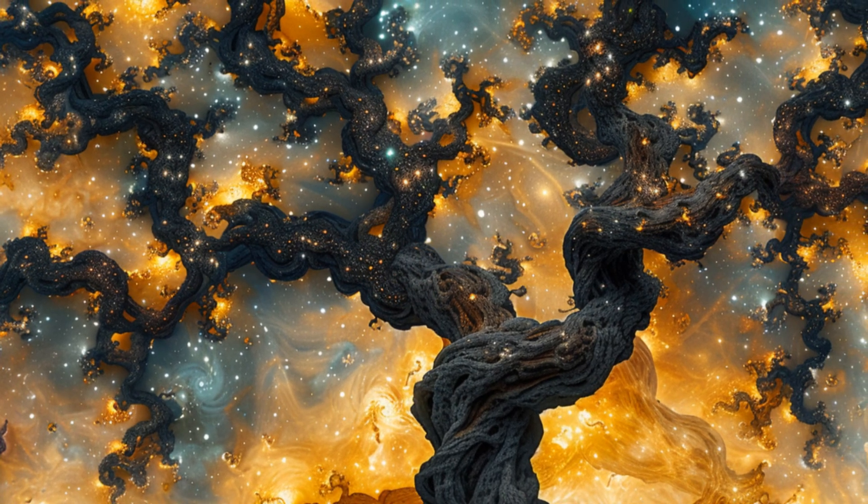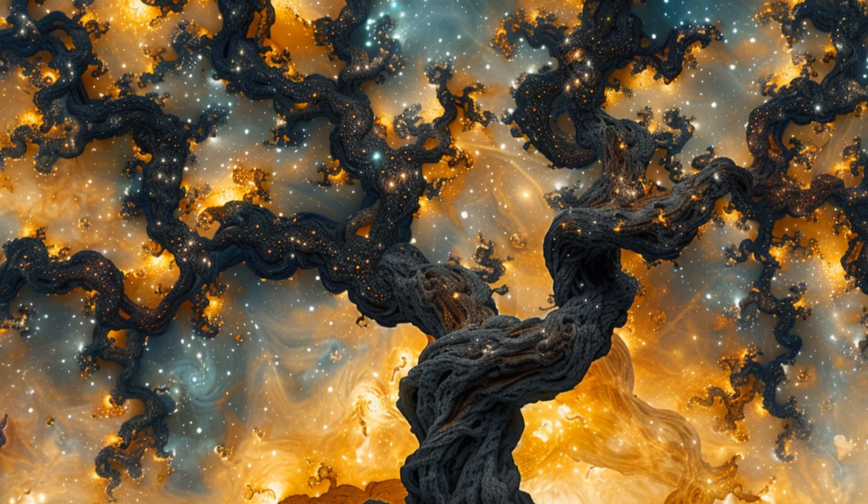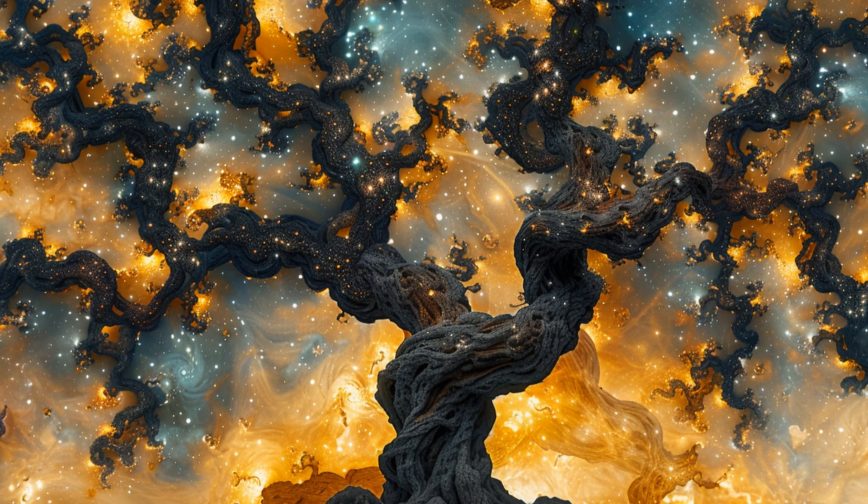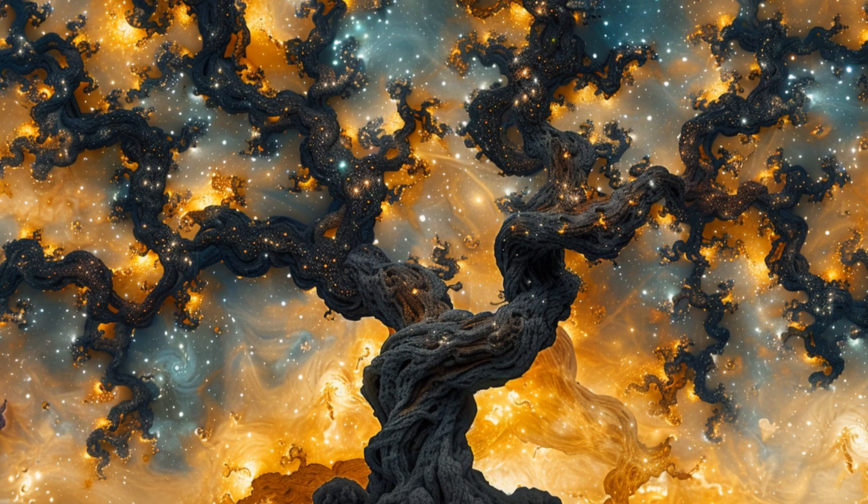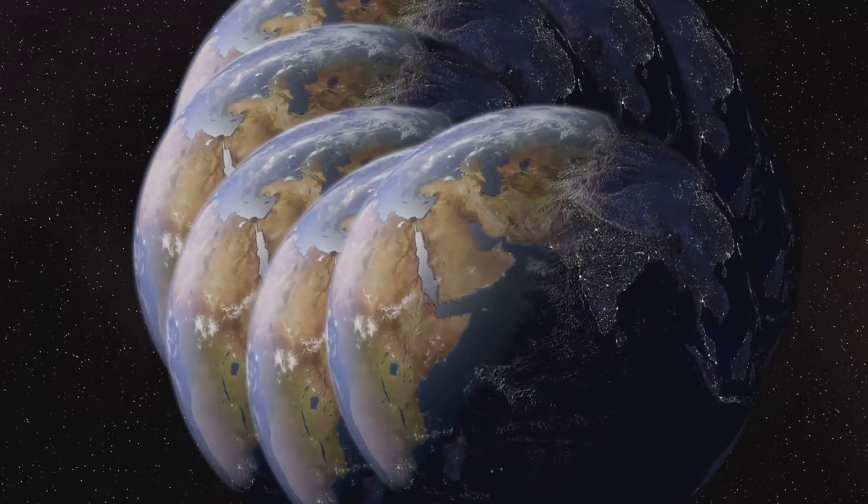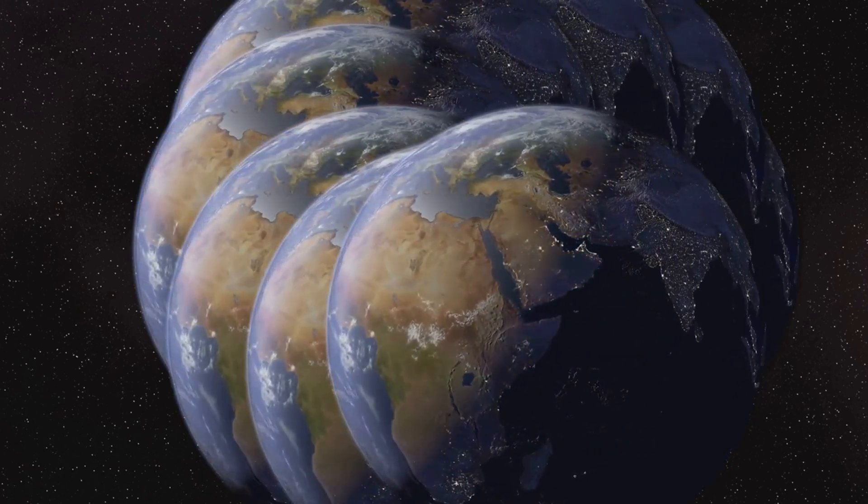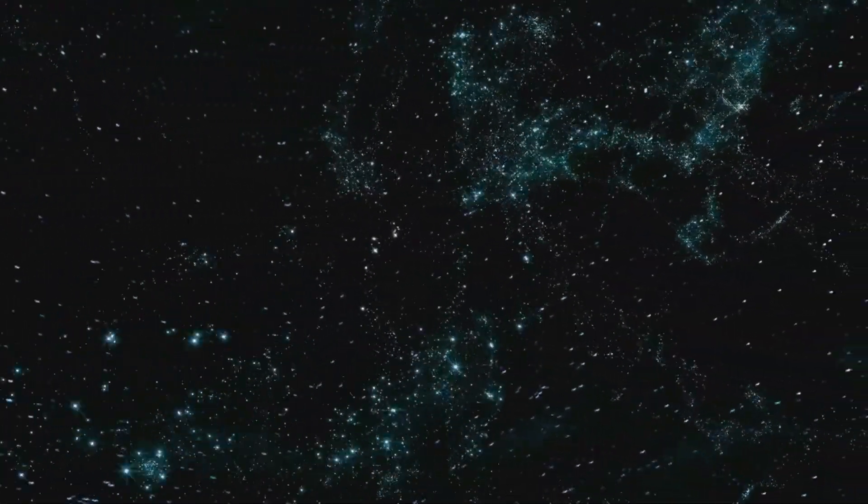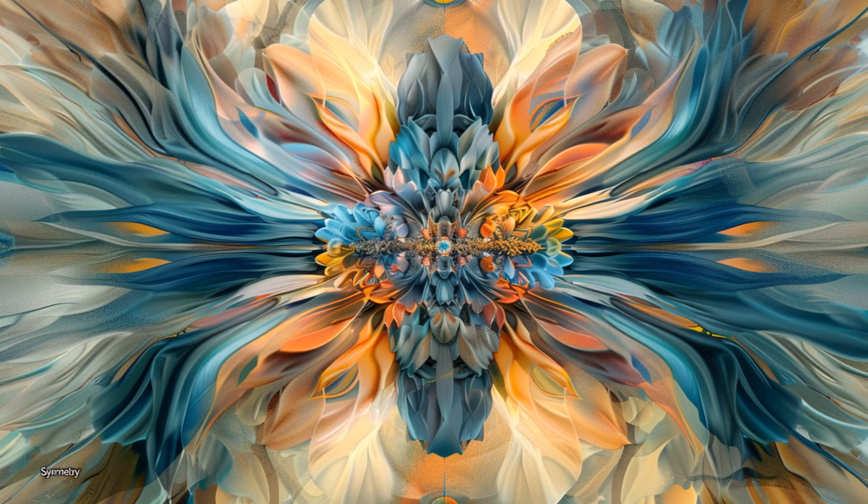The level one multiverse, also called the infinite space multiverse, comes from a simple but big idea. Our universe is never-ending. While we can only see a limited area of space called the observable universe, the universe itself might go on forever in all directions.